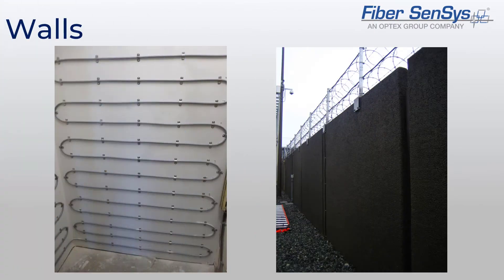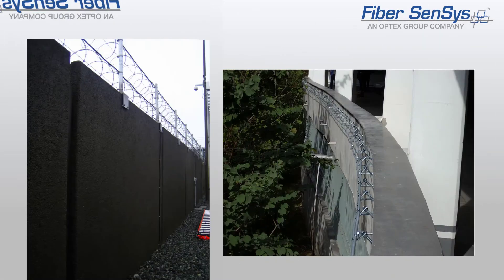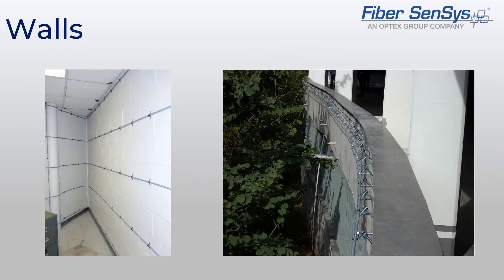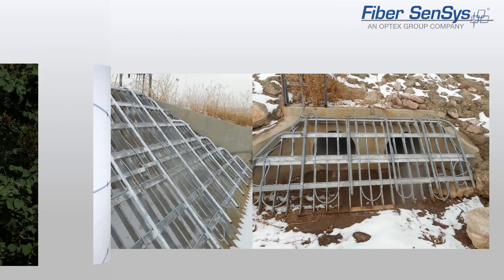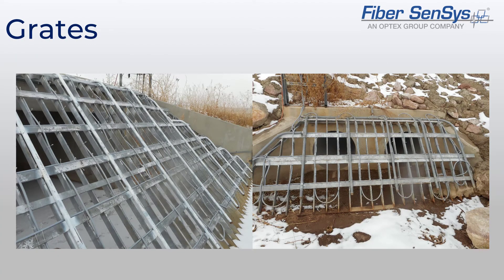In addition to fences, perimeters may have walls as well. When these walls form part of the site's protected perimeter, wall penetration intrusion must also be considered. Wall penetration systems have been employed on walls made of metal, concrete, brick, and drywall.